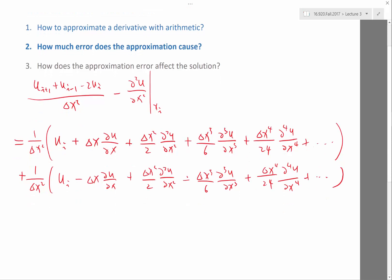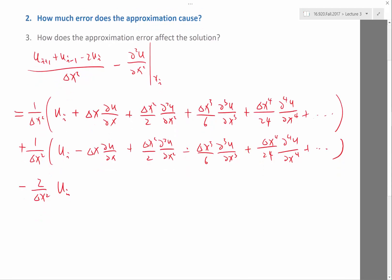Now, we have the third term minus 2 over delta x squared times u_i. That we keep as it is because we want to expand all the quantities as the values and derivatives at u_i. And now, the fourth term here is minus the second order derivative at x.